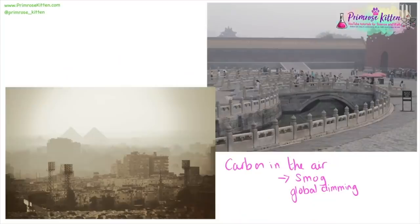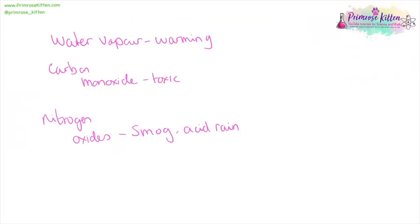One of the major pollutants is sulfur dioxide. When this goes up into the atmosphere and dissolves in the clouds, it is going to come back down as acid rain. This is going to affect a wide range of things: animals in lakes or ponds that become too acidic, plants that are going to die, and limestone statues that are going to dissolve. Too much carbon in the air leads to large levels of smog and global dimming, particularly prevalent in developing countries. Water vapour is going to contribute to the warming of the planet. Carbon monoxide is a toxic gas, and nitrogen oxides contribute to both smog and acid rain.